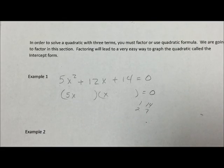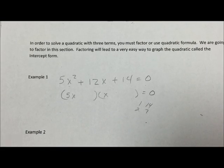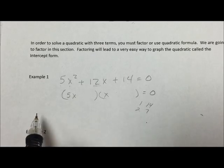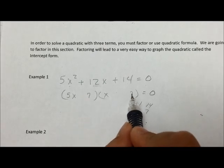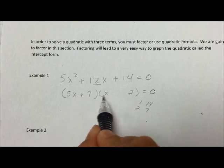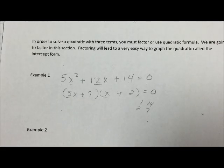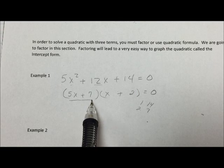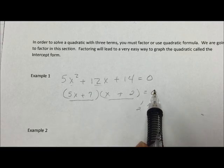I want to pick the two that will make this add up to 12 in the middle, and that is a 7 here and a 2 here, and a plus and a plus. So what I have is this times this equals zero.